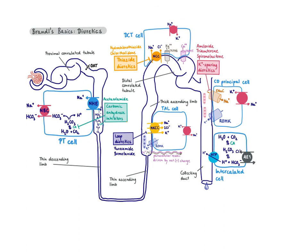Returning to the big picture overview: carbonic anhydrase inhibitors indirectly block NHE; loop diuretics act at the loop of Henle and block NKCC; thiazide diuretics block NCC; and potassium-sparing diuretics either directly or indirectly block ENaC. All of them block sodium reabsorption in the kidney tubule to different extents, thereby losing sodium in the urine and increasing urinary flow rate. This concludes the video on the mechanism of action of diuretics.